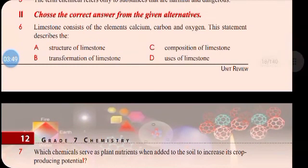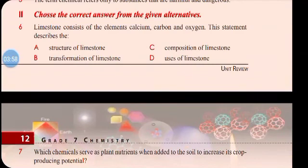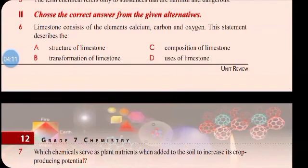Now let's see instruction number two: choose the correct answer from the given alternatives. Number six: limestone consists of elements calcium, carbon, and oxygen. This statement describes — a) the structure of limestone, b) transformation of limestone, c) composition of limestone, or d) uses of limestone. Since it says 'consists of elements,' it is telling us about the composition of limestone. The correct answer is c) composition of limestone.